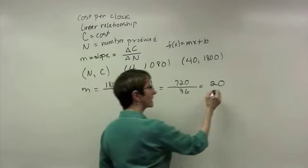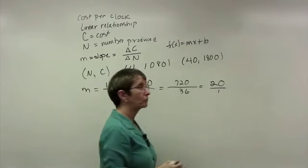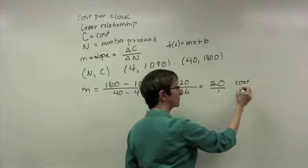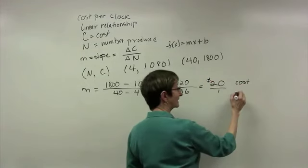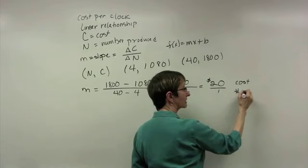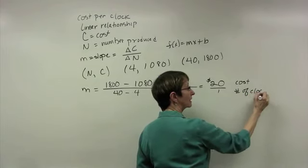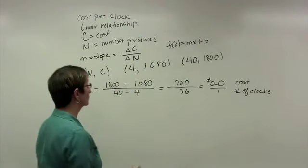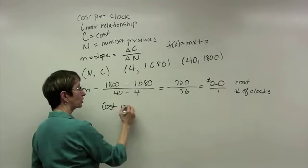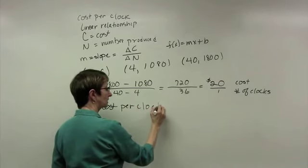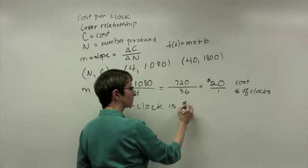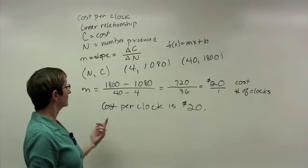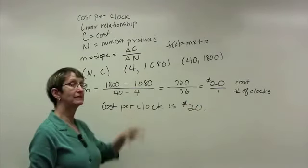Remember that 20 is the cost, so that's $20. One is the number of clocks, so this is $20 for one clock. So the cost per clock is $20. I don't need to get the whole linear relationship to answer the question. I just need to find the slope.